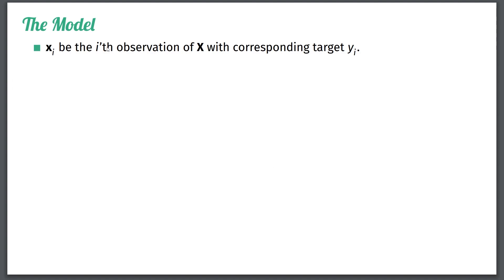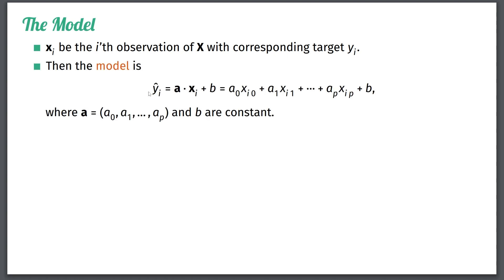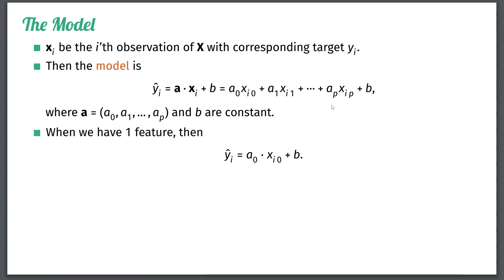Now let's explain the model. Let xᵢ be the i-th observation of x and yᵢ the corresponding target. Our model is going to be of the form: the predicted value ŷᵢ equals the dot product of a and xᵢ plus a constant b, where a is a constant vector and b is a constant — both determined in the training step. A quick reminder: the dot product is defined as the sum of elementwise products. In the case of only one feature, the prediction is just a line.